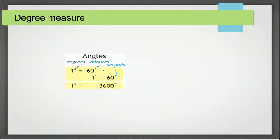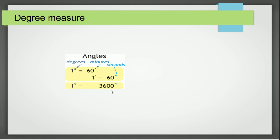To summarize: one right angle equals 90 degrees. One degree equals 60 minutes, because one degree is divided into 60 equal parts. For example, half a degree equals 30 minutes. One minute equals 60 seconds, because one minute is divided into 60 equal parts. Therefore, one degree is equal to 3600 seconds.